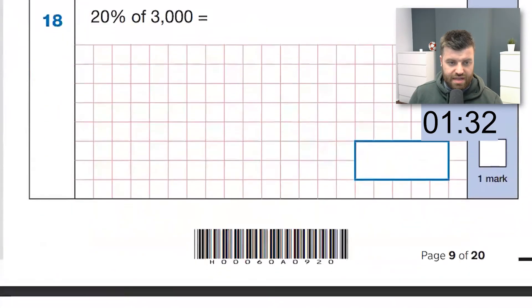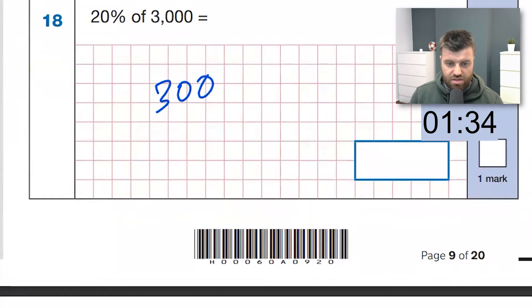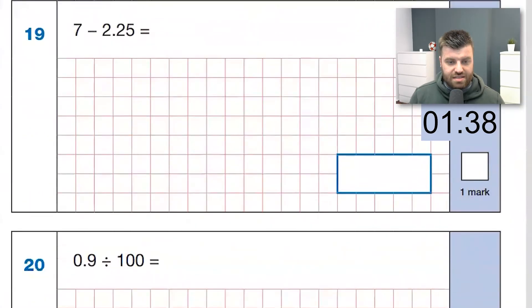Next one down here, 20% of 3,000. Well, 10% is 300. Times that by two, the answer is 600. Right, come on. Question 19, seven take away two something. So we're going to have four point, and then that's one quarter. So we're going to have three quarters left, which is 4.75.